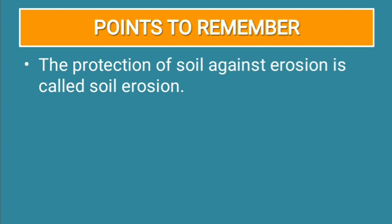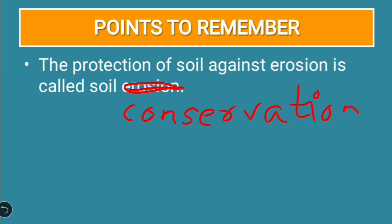The protection of soil against erosion is called soil conservation — not erosion. By mistake, I had typed erosion, which is wrong. It should be soil conservation: C-O-N-S-E-R-V-A-T-I-O-N. So what is soil conservation? Soil conservation is the protection of soil against erosion. To protect the soil against erosion — that process is called soil conservation.